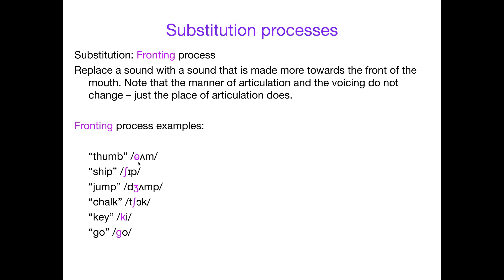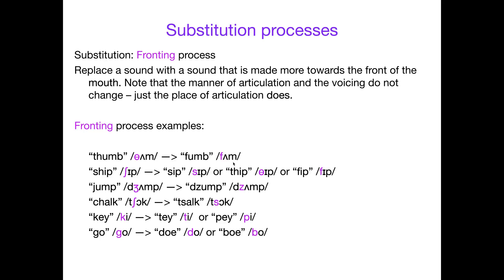With 'thumb', you're not changing the manner — it stays a fricative — and you're not changing the voicing, so it's still voiceless. You're moving it further forward, and there's one voiceless fricative that's further front. Ship is also a fricative, post-alveolar and voiceless. You can replace it with fronting with any other fricative further front: move to alveolar and you get 'sip', interdental gives 'thip', labiodental also gives 'fip'.